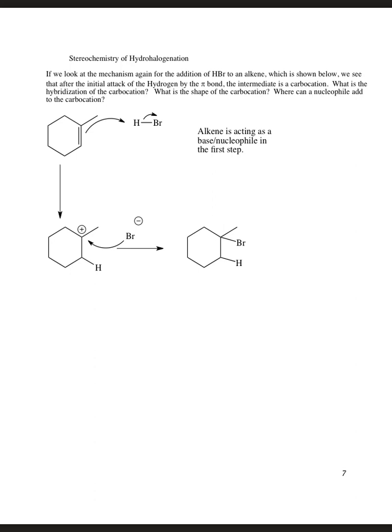Here's the mechanism again for the addition of HBr to an alkene. The pi bond acts as a nucleophile — it grabs the hydrogen, kicks off the bromine, giving us the tertiary cation. Then the Br⁻ anion adds to that to give us our final answer. Every time: the pi bond attacks the least electronegative atom, going to the least substituted carbon, and then the more electronegative atom adds to the more substituted carbon.